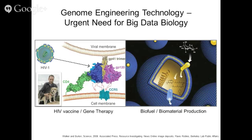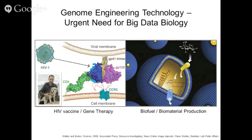The second example is in biofilm and biomaterial production, where genome engineering technology will allow us to systematically engineer the metabolic pathways of microbiomes. Then that way, we will be able to engineer the metabolic pathways for production of very useful industrial cell materials or even biofuels and other useful cell masses for industrial uses.